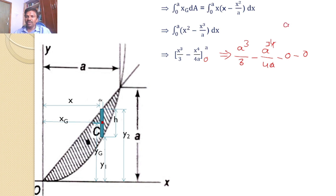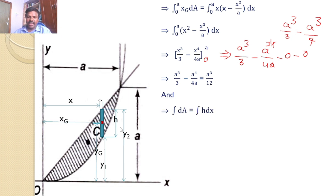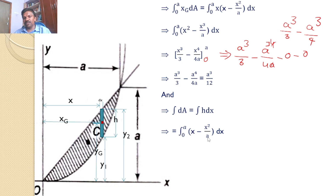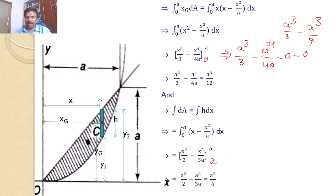The a terms cancel, giving a³/3 − a³/4, which simplifies to a³/12. Similarly, ∫da = ∫h·dx = ∫₀ᵃ (x − x²/a)dx. Integrating: x → x²/2 and x²/a → x³/(3a), with limits 0 to a. Substituting: a²/2 − a³/(3a) − 0 = a²/2 − a²/3, which simplifies to a²/6.